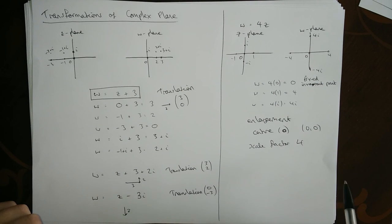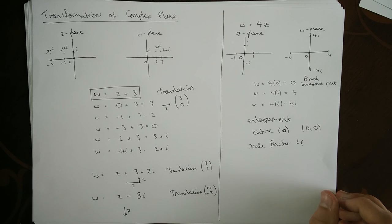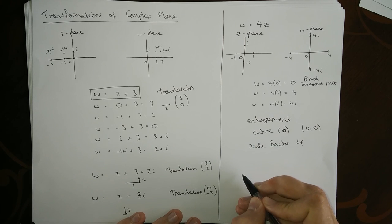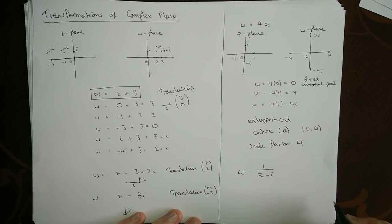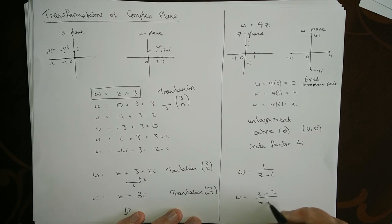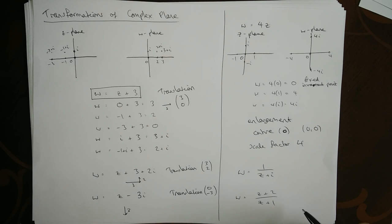This is far too easy for an FP2 chapter alone, so we need to be getting on talking about things of this kind of form: w equals one over z plus i, or something of the form like w equals z plus two over z plus one. These things are called Mobius transformations and they're the kind of things that we want to talk about next.